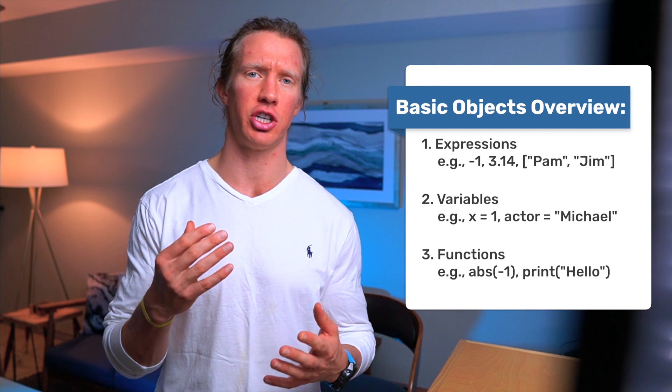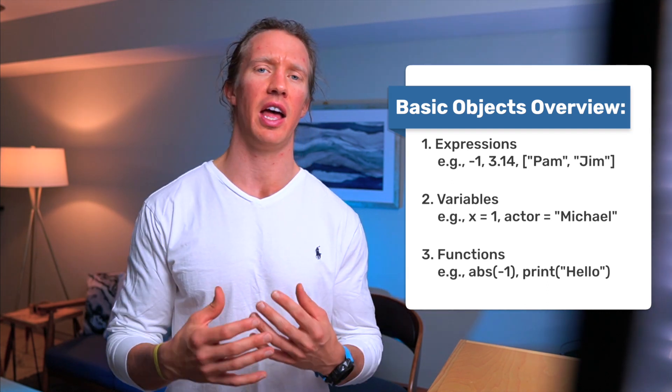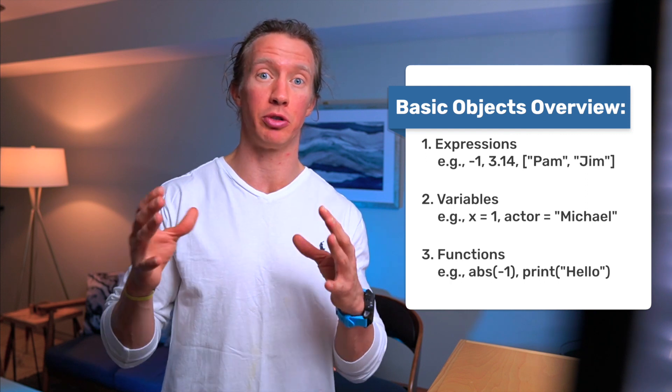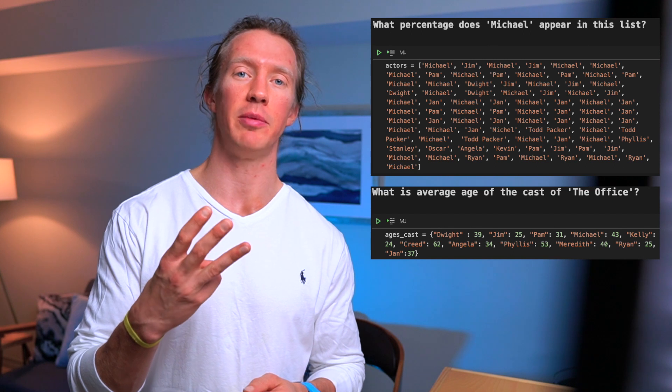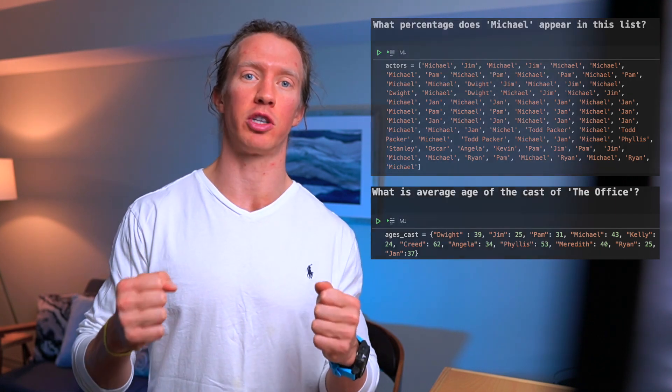We're going to be focusing on three main objects. The first one is expressions, where we're going to be looking at things like integers, lists, and dictionaries. From there we're going to move into variables — how we can assign these expressions to certain variable names. And then thirdly we're going to be looking at functions, mainly built-in functions within the Python standard library, things like the print statement. Once we cover those three basic types we'll move into practice problems.